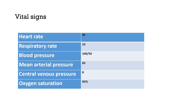Vital signs show almost no abnormal data: heart rate 95, respiratory rate 22, blood pressure 100/50, mean arterial pressure 65, central venous pressure 8, and oxygen saturation 92 percent.